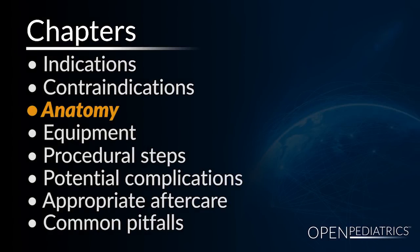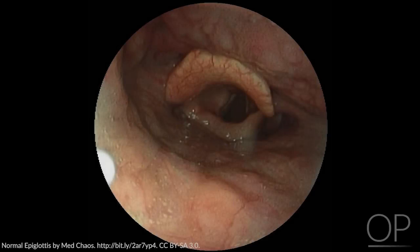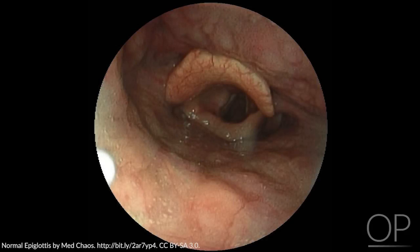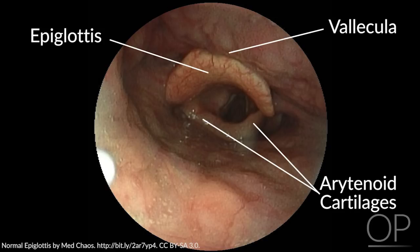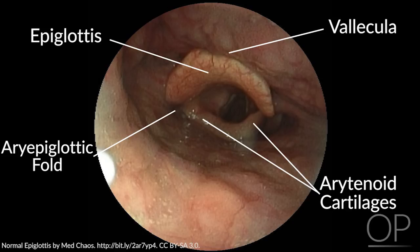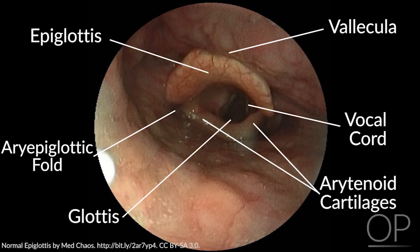Anatomy. Knowledge of the relevant anatomy of the upper airway and larynx is essential for a successful intubation. Key anatomical landmarks to note during intubation include the epiglottis, follicula, arytenoids, aryepiglottic folds, vocal cords, and glottis.